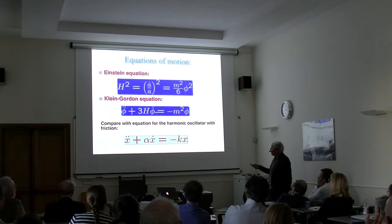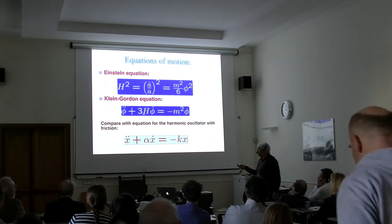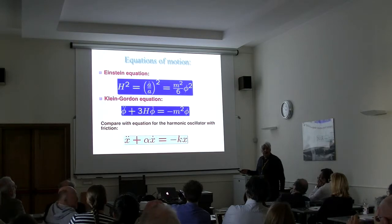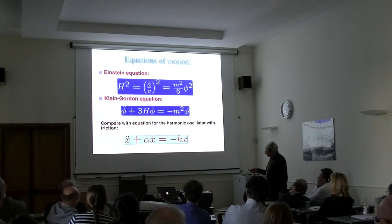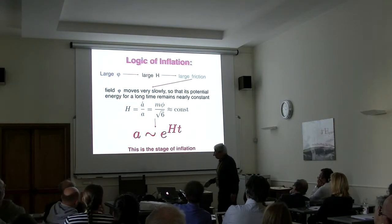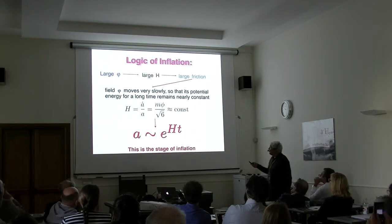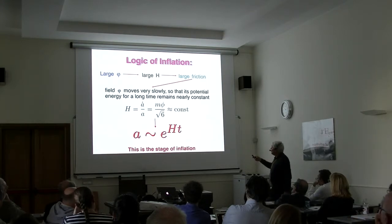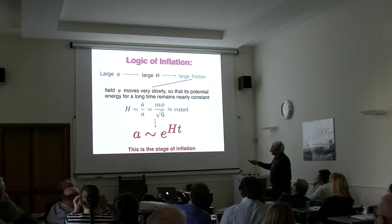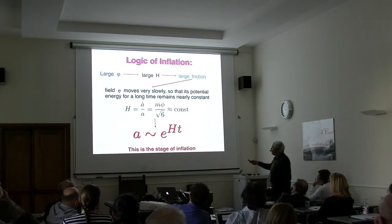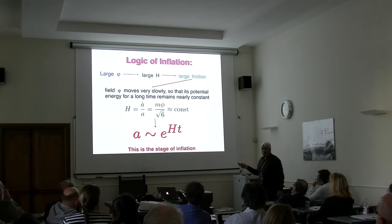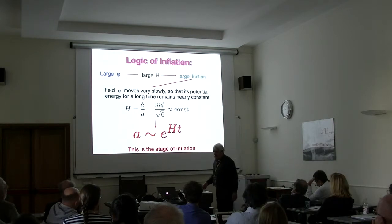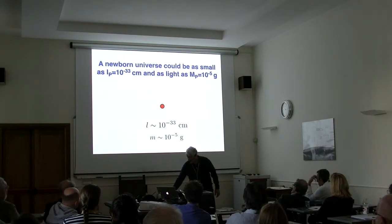The Hubble term plays the role of friction for the scalar field equation. If the Hubble constant is sufficiently large — as it was when the universe was young — the scalar field moves very slowly, like a ball in a viscous liquid. Large scalar field means large Hubble constant, large friction. The scalar field phi moves down very slowly, the potential practically does not change, and the Hubble constant remains nearly constant, giving exponential expansion.